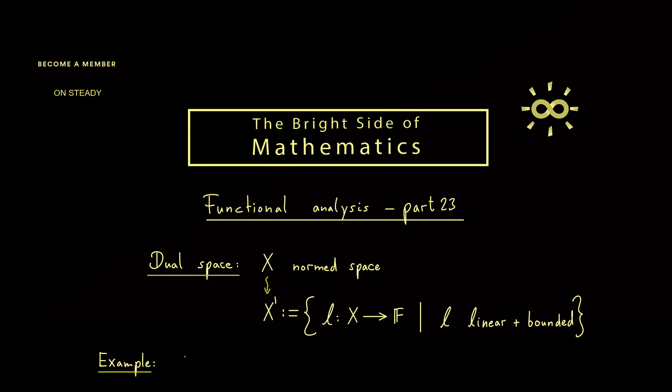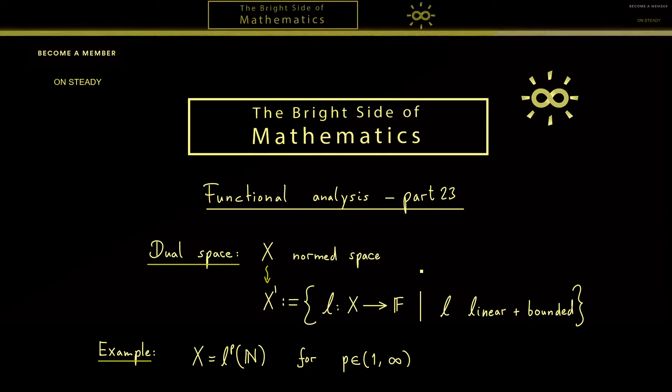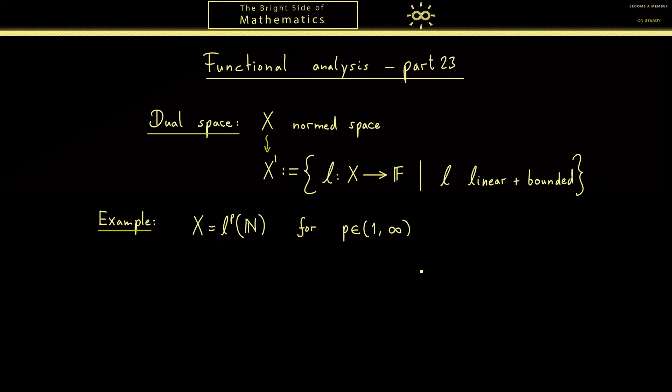As promised this video is about examples so I choose X to be the Lp space, and as always I want p to be between 1 and infinity. So for this Lp space the dual space looks indeed very nice. Namely we can say X' looks more or less the same as the Lp' space. And this p' there is just a number indeed it's the Hölder conjugate of p. More concretely this means that 1 over p plus 1 over p' is exactly 1.